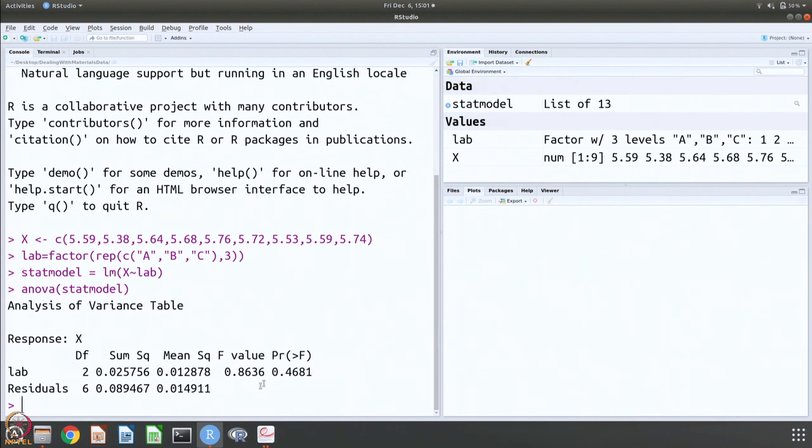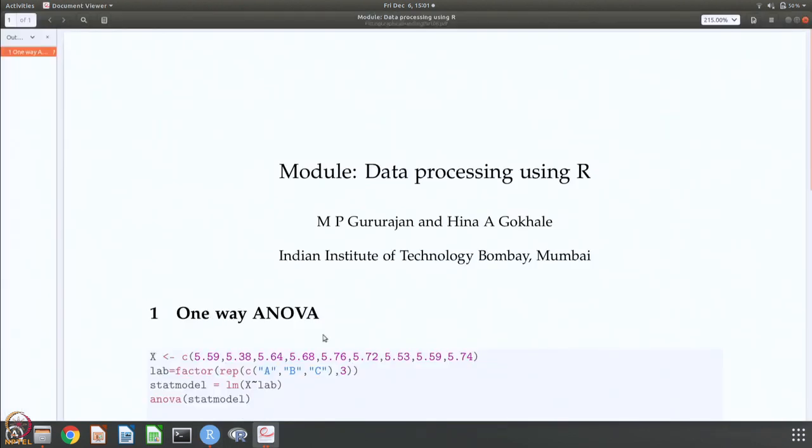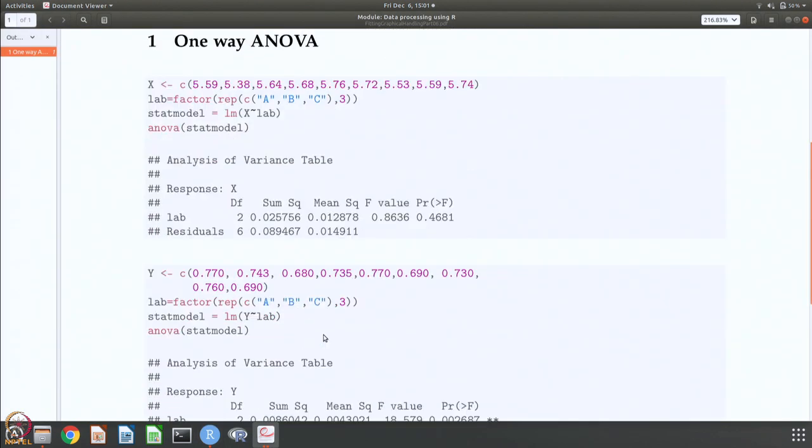You get this F value and basically the F value, whether it is small or large, tells you whether you can accept that within statistical differences these data are the same or that within statistical difference these data are significant.